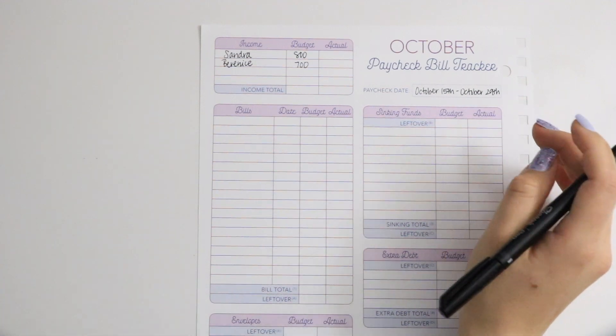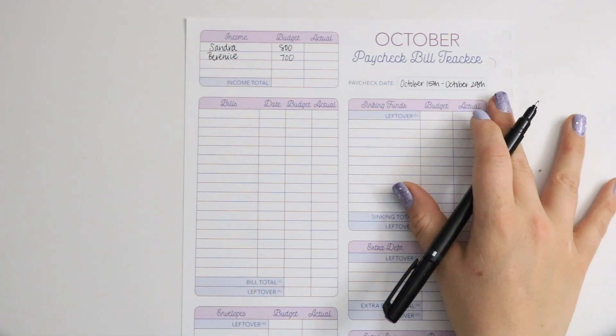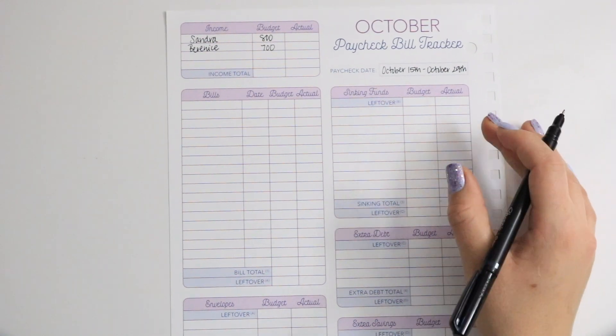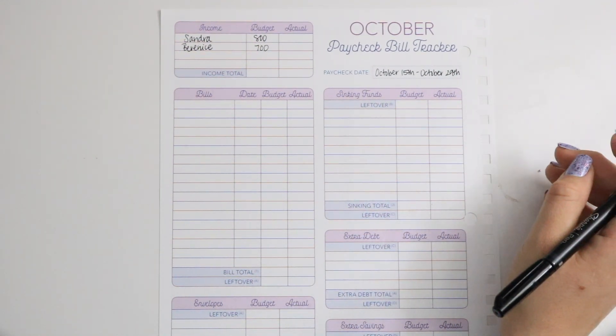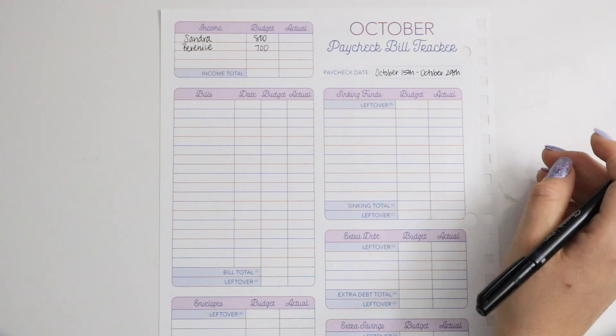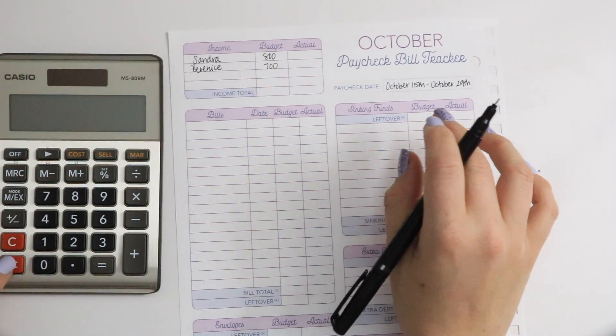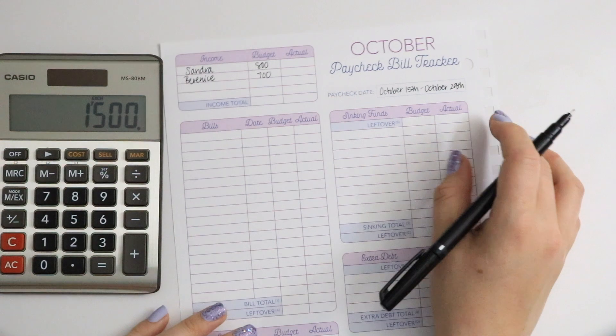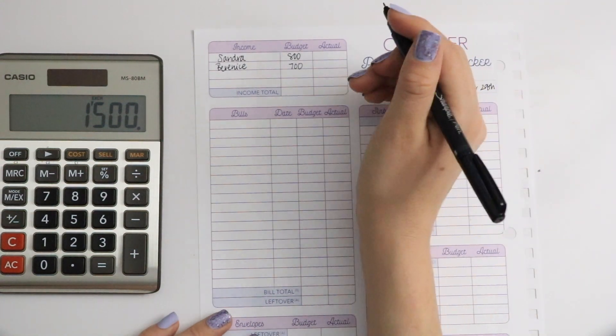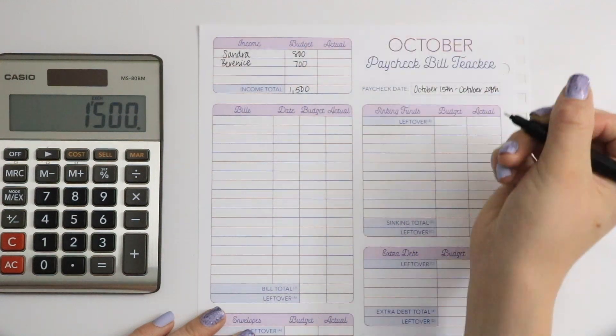I also have some news to tell you guys. It's actually quite crazy and our budget will be changing once those changes have been added to our accounts. But we're just going to do the $800 plus $700, so that comes to an income total of $1,500.